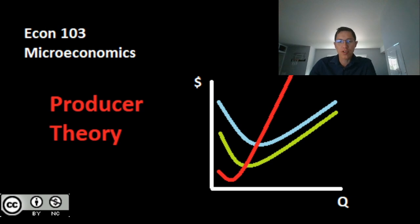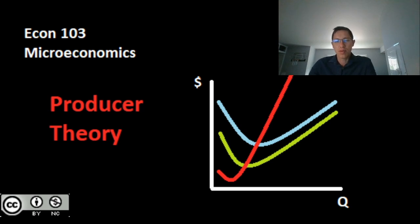We're also going to work out how they determine a price for their good. Today in this video, all we're going to be taking a look at is the basic definitions, the basic concepts, and assumptions of our producer. In the next video, we're going to get into the nitty gritty of building up the model. Keep in mind, this is probably one of the most difficult models in micro. We're going to deal with it right up front so that we have a good foundation for when we move on to some of the easier models as we carry on with the course.